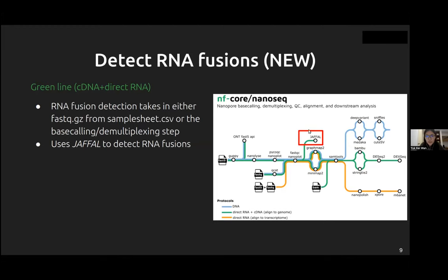On the green line, there is also a new functionality where we included JAFFA for detection of RNA fusions. It takes in a FASTQ file from either the sample sheet — given that it is demultiplexed — or from upstream processes, whether you start from FAST5 files or undemultiplexed FASTQ files.